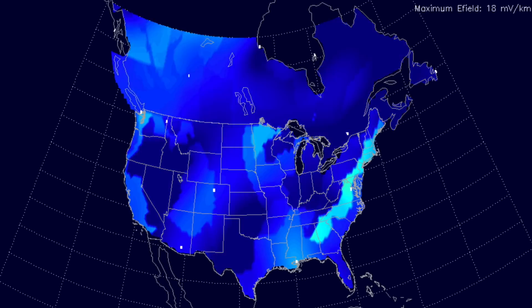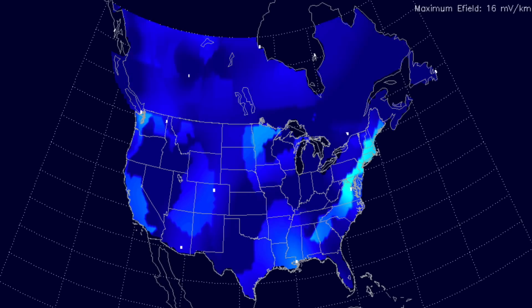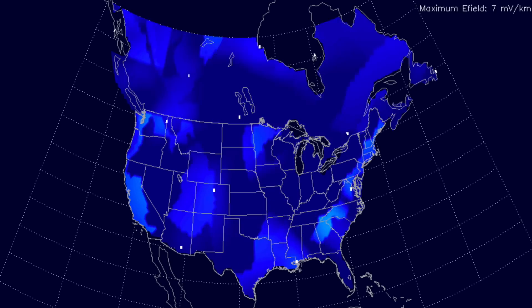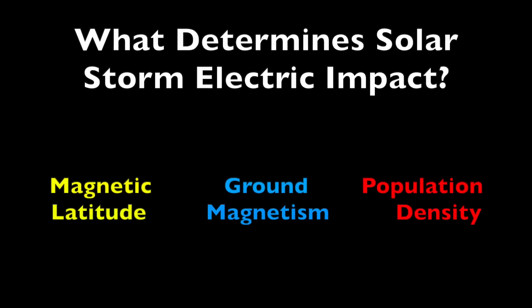I did know it would be pleasing this morning to show the new map with Canada finally included, but I did not anticipate the level and breadth of interest in the map and the impacts it is showing. So let's explain it simply. These are where the induced electric current from a solar storm is strongest, but what exactly determines that? It is actually a nearly equal combination of three things: magnetic latitude, ground magnetism, and population or electric grid density.